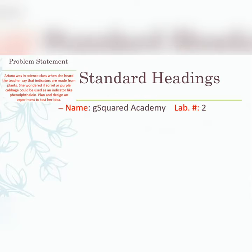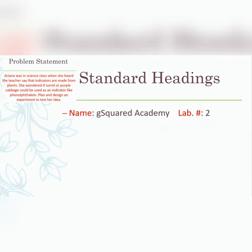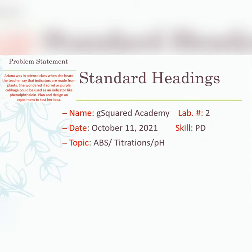You will need your standard headings: name — G Squared Academy; this is lab number two in the series; date; skill — planning and designing; topic — acids, bases and salts (ABS). On the acids, bases and salts topic you generally look at the pH scale, pH meter, etc. It could be titrations as well, and you could specify you are looking at the pH of substances.